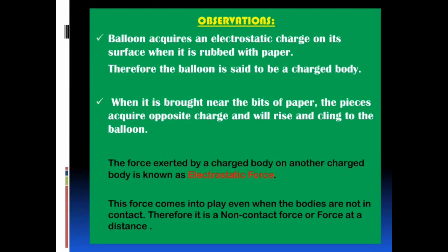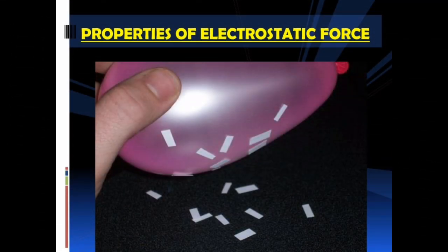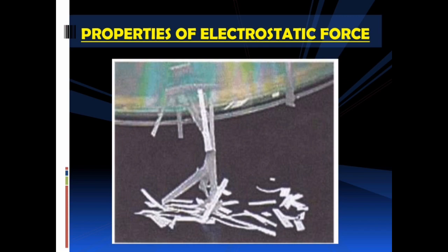Observations during the activity: the balloon acquires an electrostatic charge on its surface when rubbed with paper; therefore, the balloon is said to be a charged body. When it is brought near bits of paper, the pieces acquire an opposite charge and will rise and cling to the balloon. The force exerted by a charged body on another charged body is known as electrostatic force. This force comes into play even when the bodies are not in contact; therefore, it is a non-contact force or force at a distance.